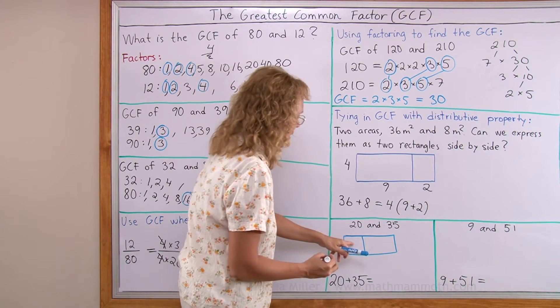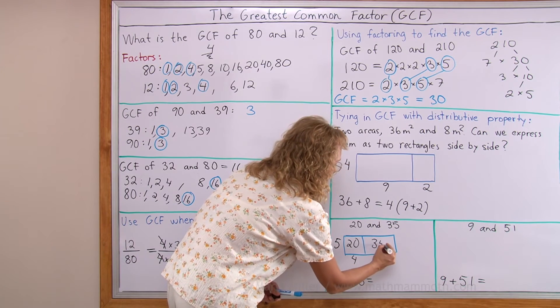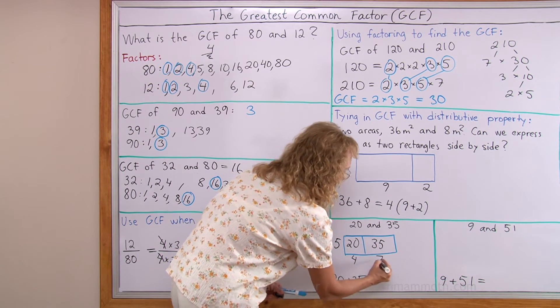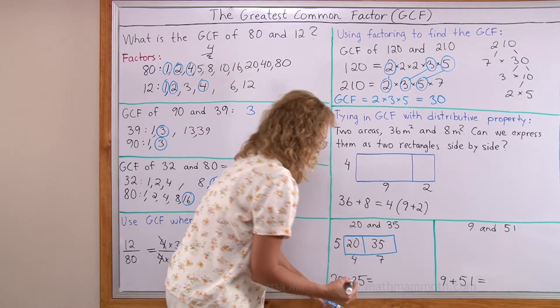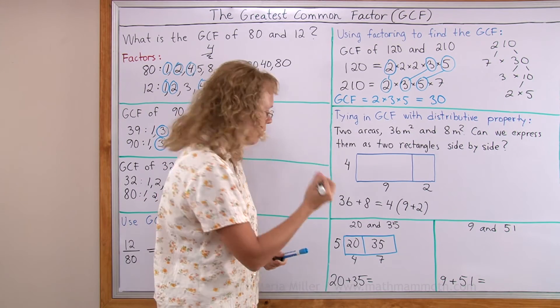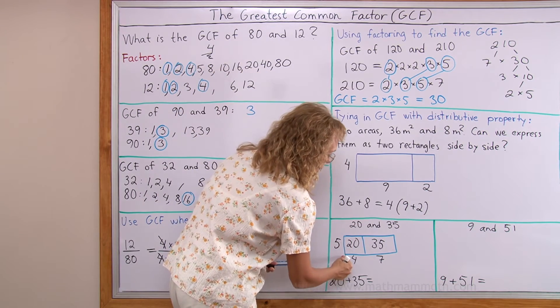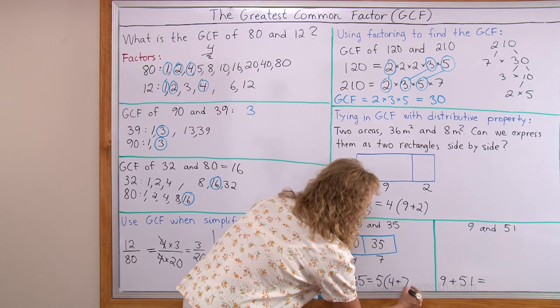And, so this area is 20. It's going to be 5 times 4. This area is 35. It's going to be 5 times 7. And, now I'm going to express this, the addition of these areas. The area of the whole rectangle I'm going to express is that this side times that side. 5 times 4 plus 7.